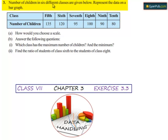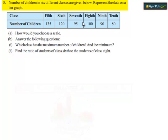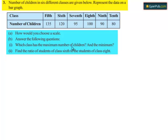Question number three: the number of children in six different classes are given. Represent the data on a bar graph. The number of classes and number of children are given in tabular form. In part A, choose a scale. In part B, answer the following questions.